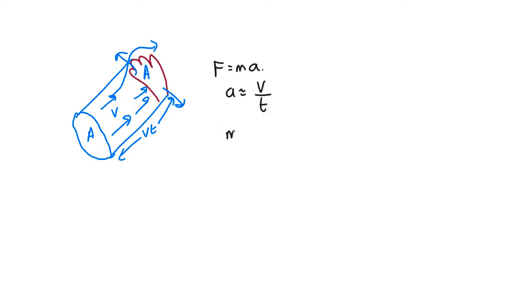How about the mass? Well, the mass is going to be roughly this volume times the density of air. So it's going to be the volume, which is the area times the length. Length is vt times the density of air.